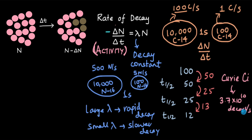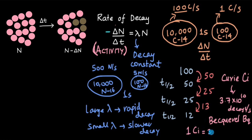The SI unit of activity is the becquerel, denoted by capital B small q. The relation is: one curie equals 3.7 × 10^10 becquerels. So one becquerel equals one decay per second. These are the units for activity.